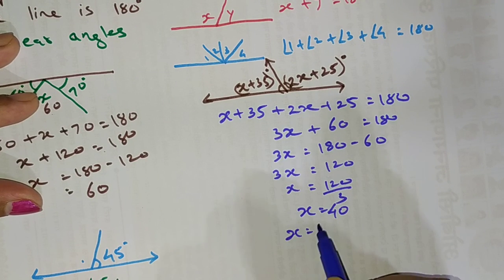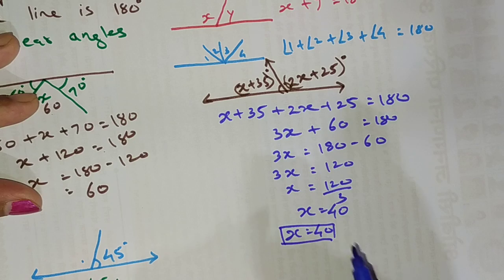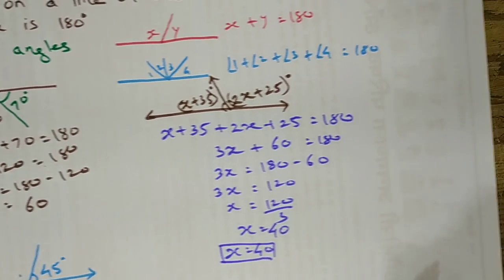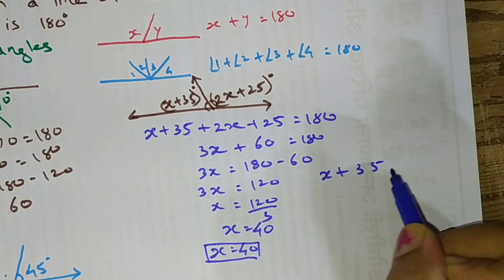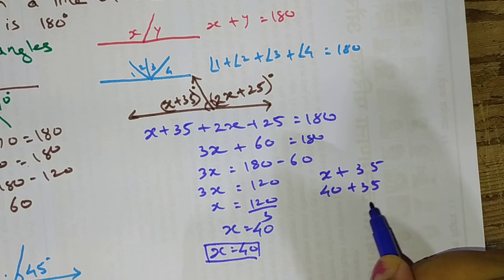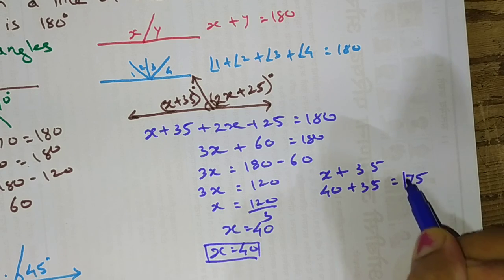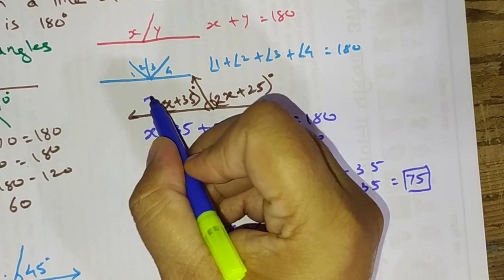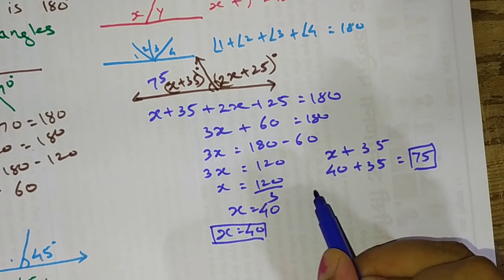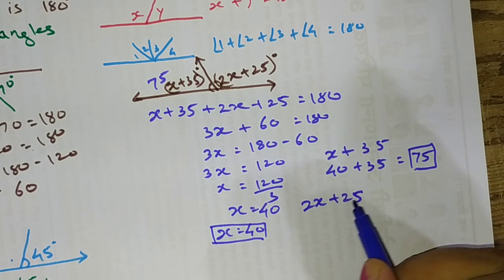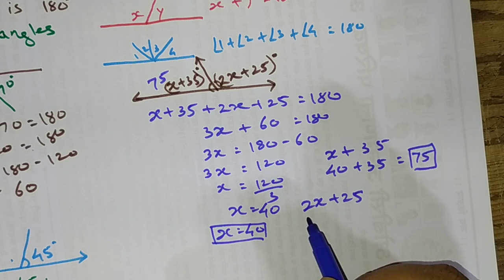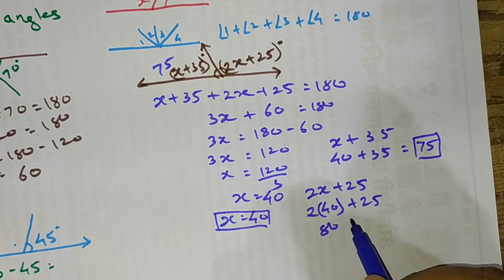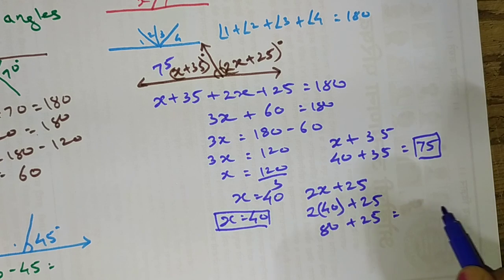Now that x equals 40 degrees, we can find the actual angle values. For x plus 35: that is 40 plus 35, which gives 75 degrees. For 2x plus 25: that is 2 times 40 plus 25, which is 80 plus 25, and that sums to 105 degrees.